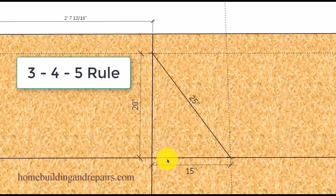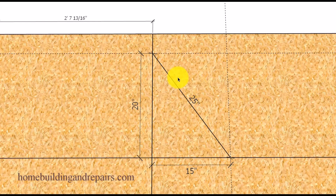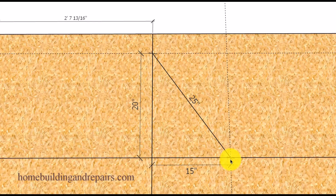The 3-4-5 rule works like this: 3 on one side, 4 on this side, and 5 on this side. I simply multiplied each by 5: 3 times 5 is 15, 4 times 5 is 20, and 5 times 5 is 25. I will put a link here in the video to another video I already made if you're looking for more information about this.